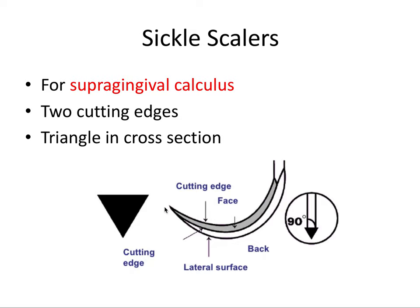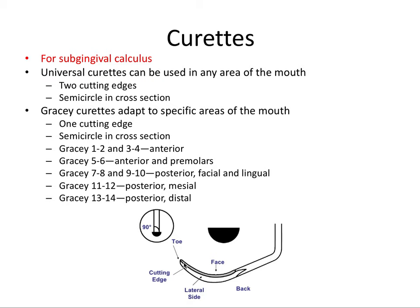The sickle scaler has a very sharp tip that could injure gingiva, so it's used above the gingival margin only. For subgingival calculus, we have curettes that have a rounded tip, so you don't have to worry about ripping and injuring the gingival tissue.